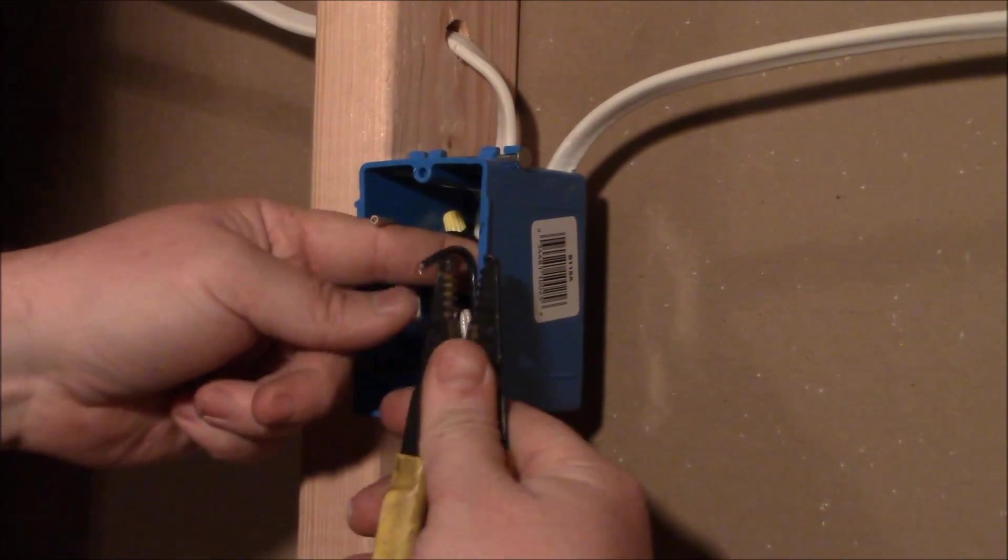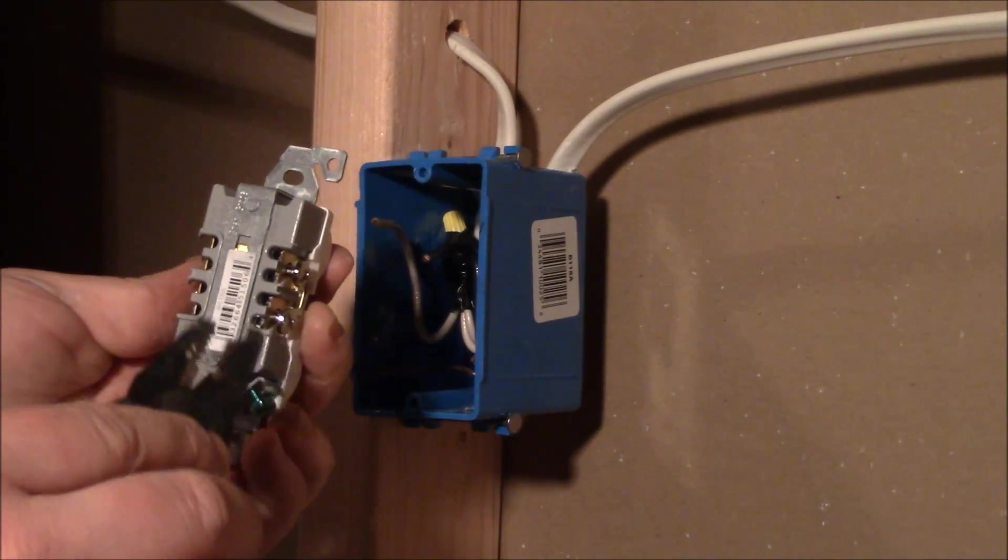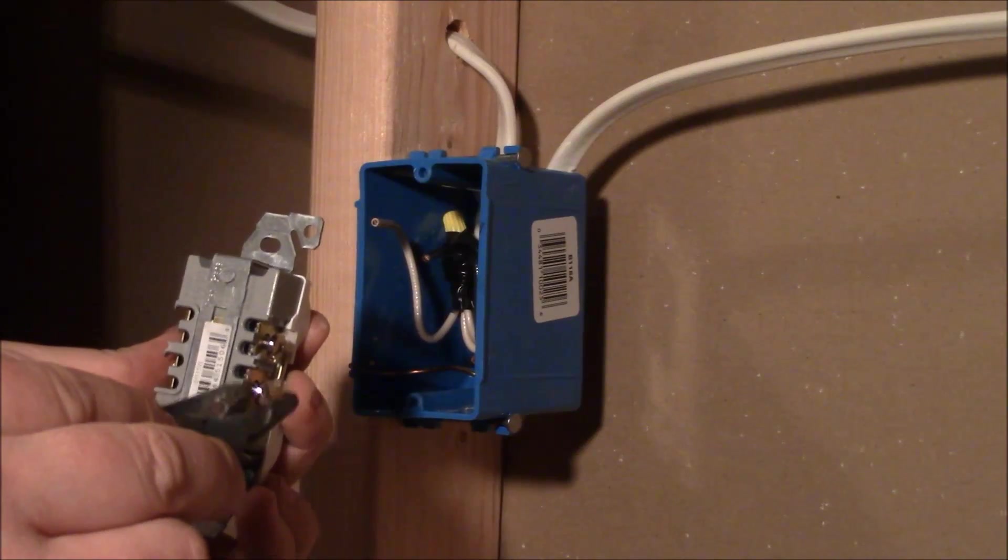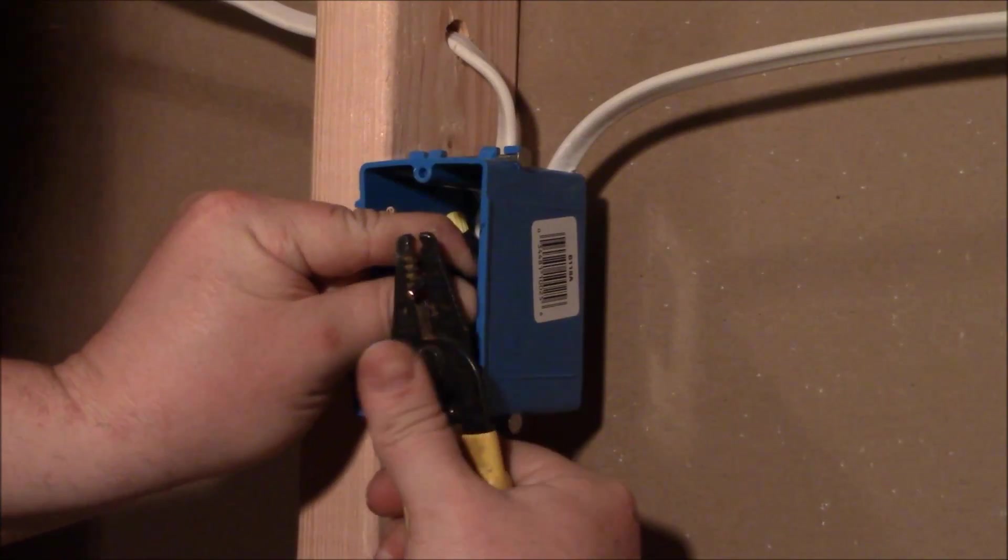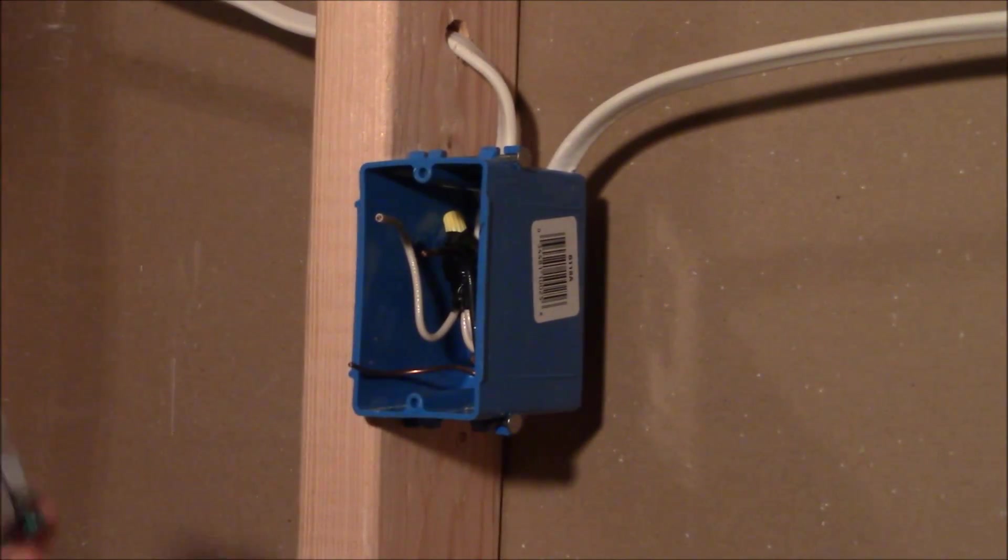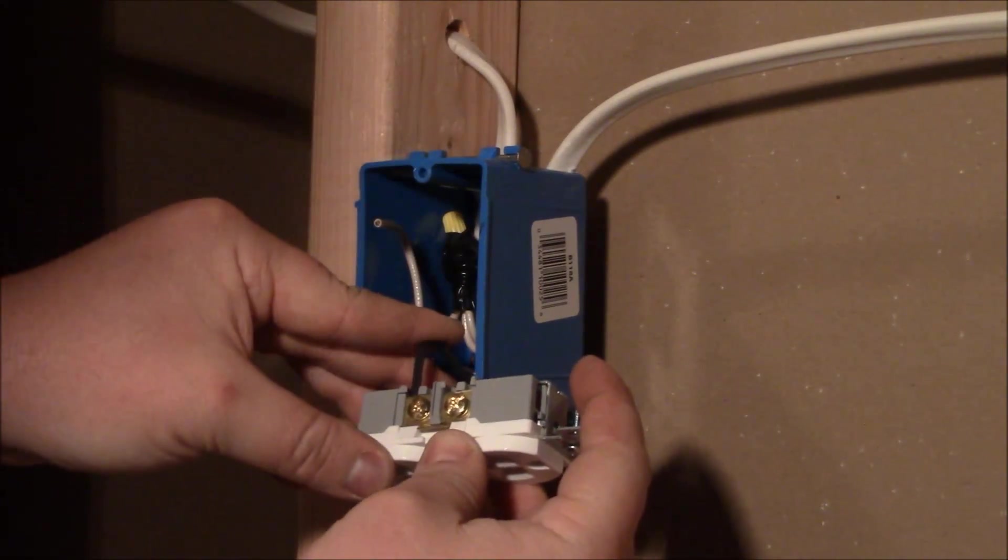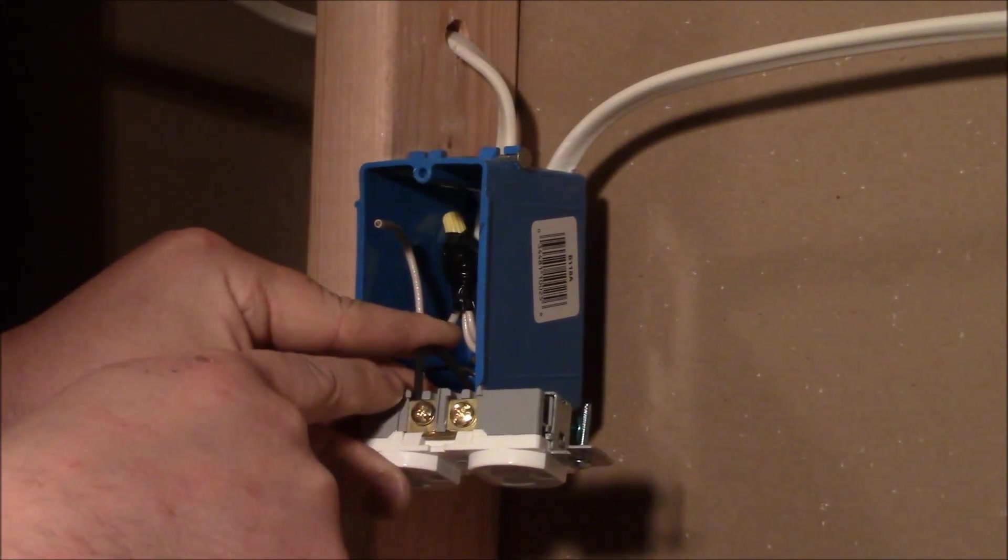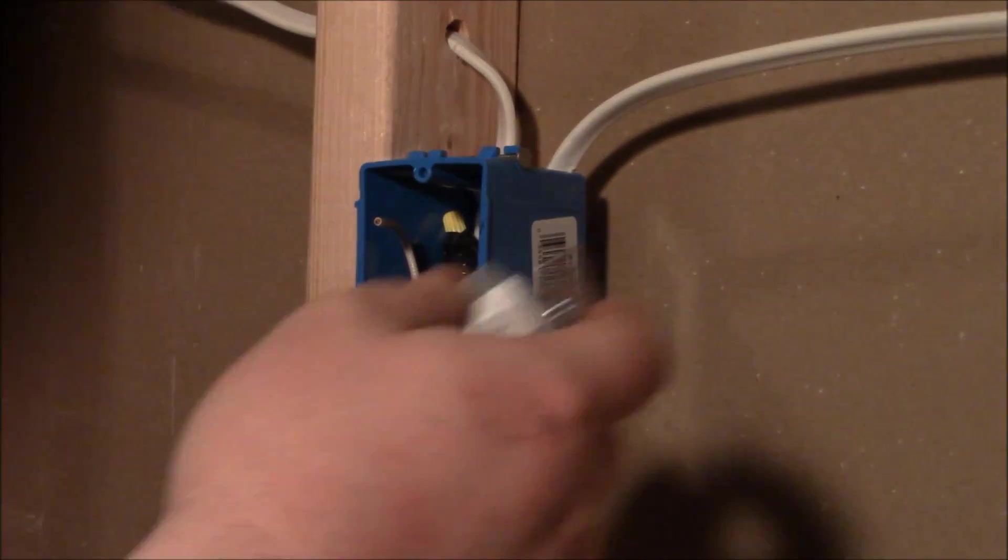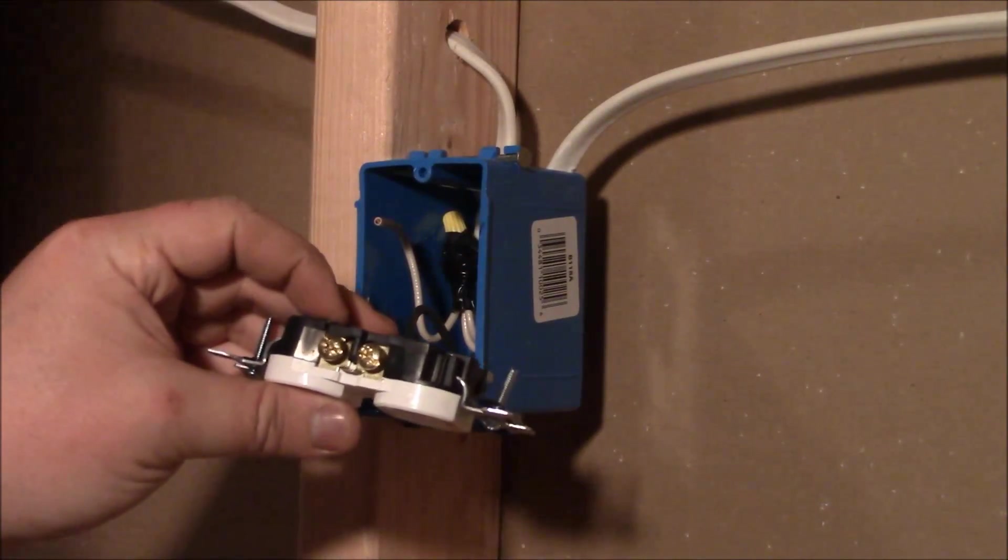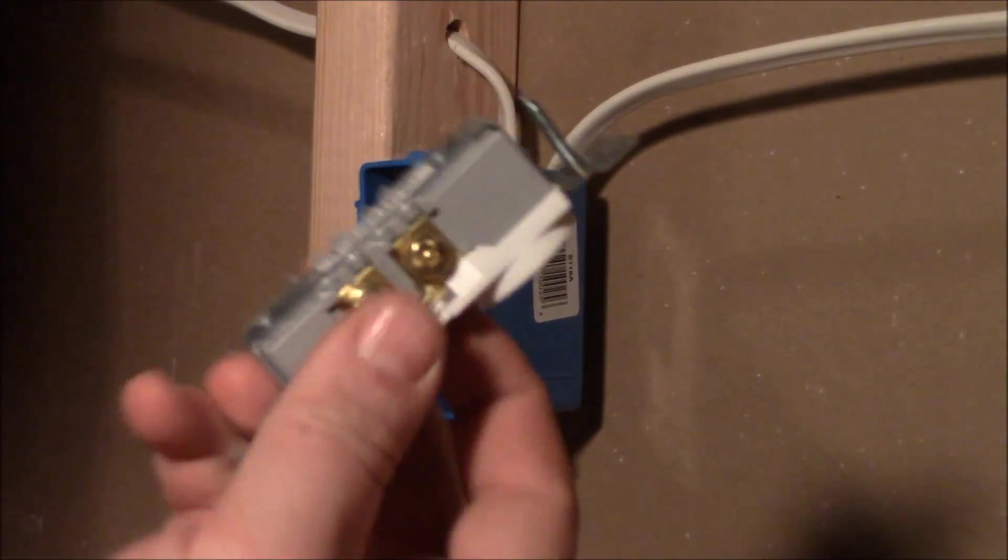Now we'll go ahead and strip these. If you're going to use this sort of socket where it has a compression fitting, you would just do just enough insulation where you could get that wire to seat in there all the way to the bottom without leaving any exposed on the back like that.